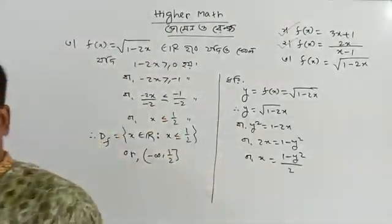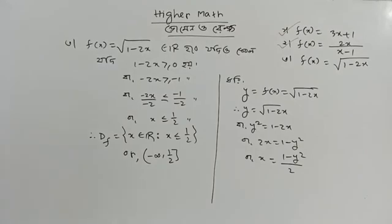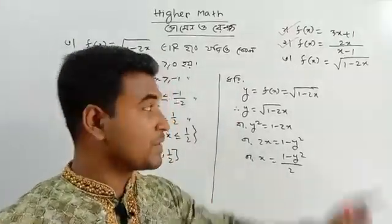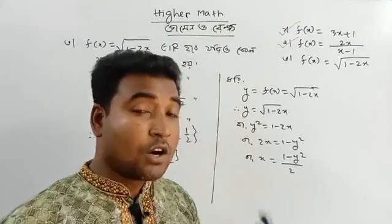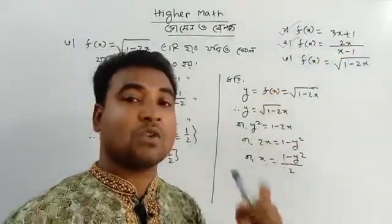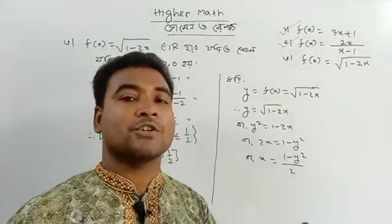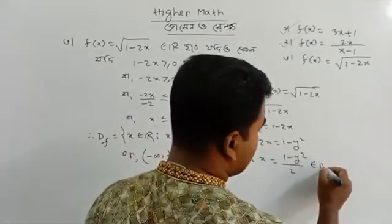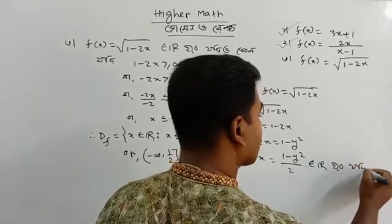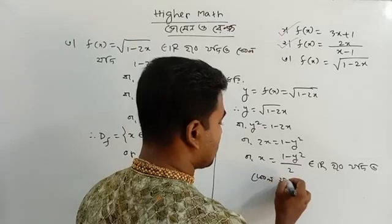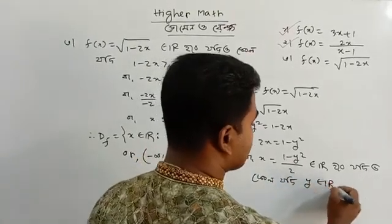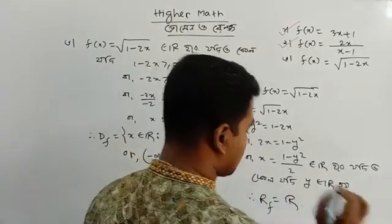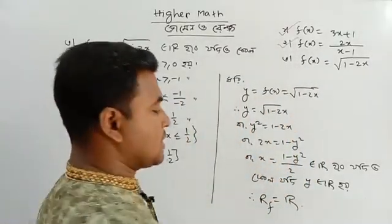What is the range? What does the range mean? If a value only comes as output, it doesn't have any other output — that means you will have an output value. So eta belongs to R. If y belongs to R, what is range of f?